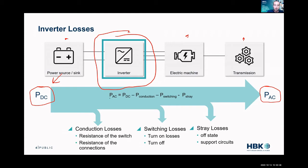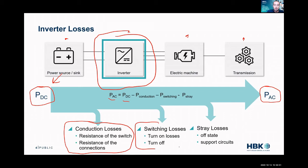Where does that energy go? If we take our equation here: P_AC equals P_DC minus conduction losses — these are the actual resistance of the switch, the resistance of the components and transmission lines — we have switching losses. When we turn a switch on or off we incur some energy loss, and those can add up. Inverters are switching in the 8 to 10 to 20 kilohertz range.